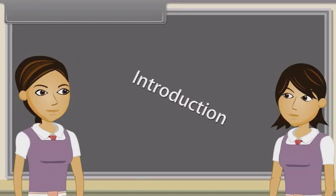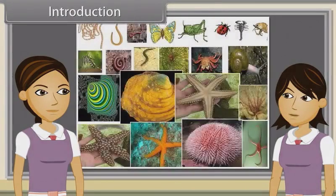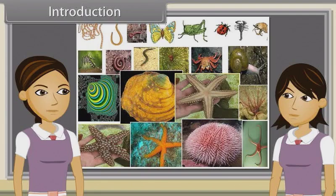Introduction: Sharmila, in our last discussion we studied characteristics of platyhelminthes, aschelminthes, annelida, arthropoda, mollusca and echinodermata. Yes, now we are going to discuss characteristics of hemichordates, chordates, vertebrates, cyclostomata, chondrichthyes, osteichthyes, amphibians, reptilia, aves and mammalia.